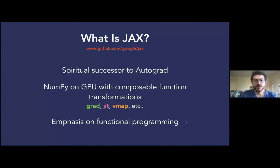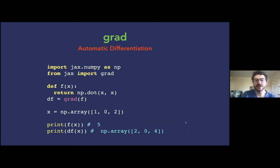JAX, which is what JaxMD is built on, is a new machine learning library — or really a numerical computing library with automatic differentiation support. If you've heard of Autograd out of Harvard, it's the spiritual successor to Autograd. It's basically NumPy on GPU with composable function transformations. If you know NumPy, it has almost a one-to-one API with NumPy, so you kind of already know JAX. It's also functional, so everything is immutable and higher-order functions are everywhere.